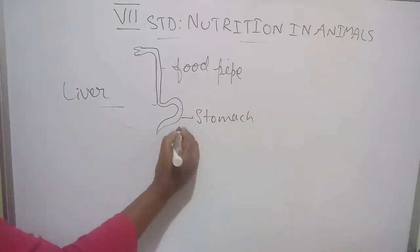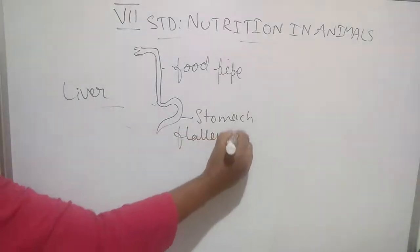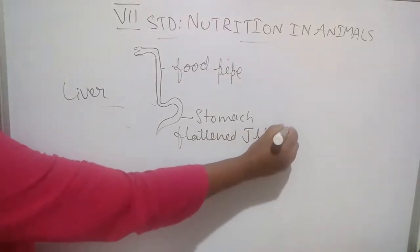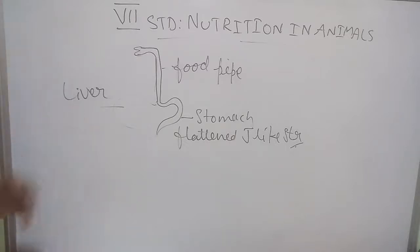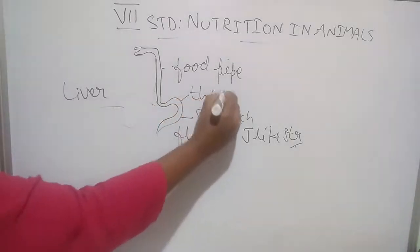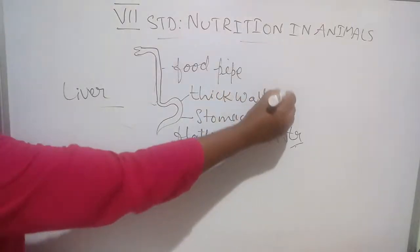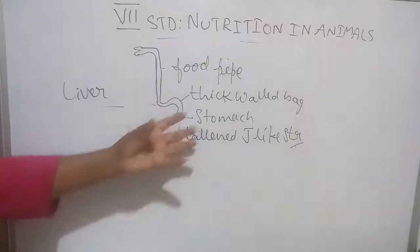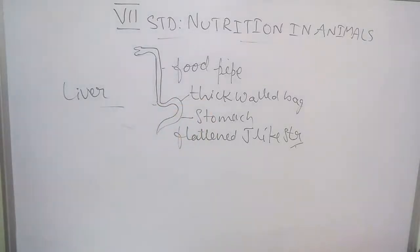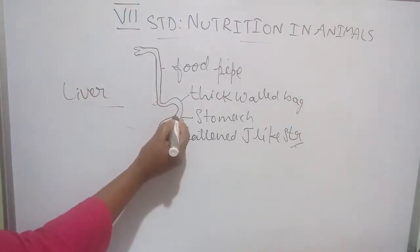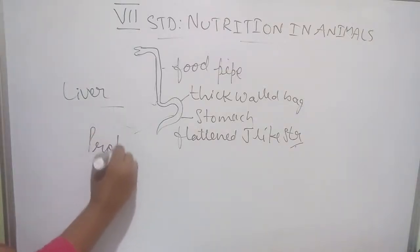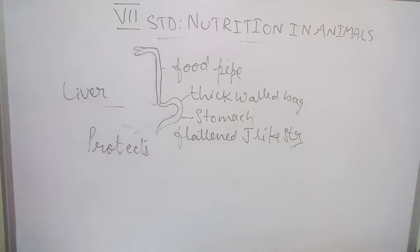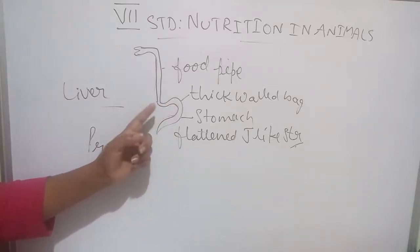We can describe it as a flattened J-like structure. Our stomach has thick walls. The inner wall is mainly responsible for the protection of the food whatever enters into the stomach.